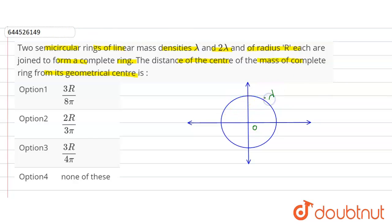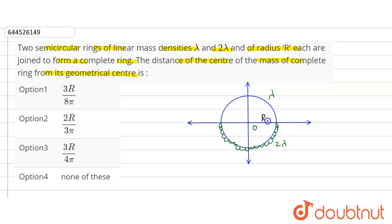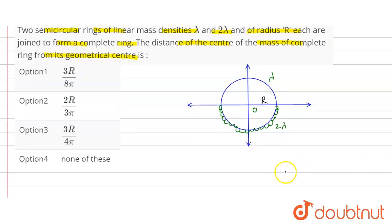This is our x-axis and this is our center. This is one semi-circle — the upper part — with mass density lambda, and here is the other semi-circle with mass density two lambda. Radius R is given. Let the geometrical center be at the origin.